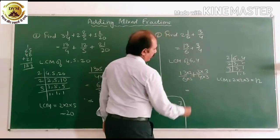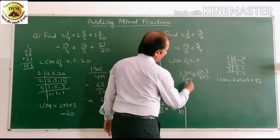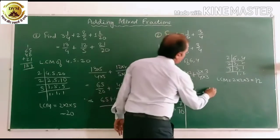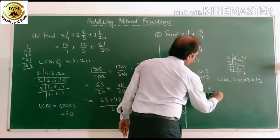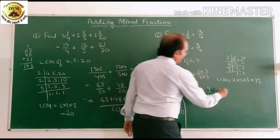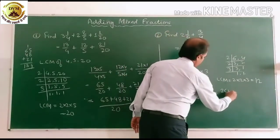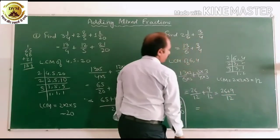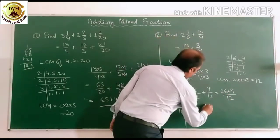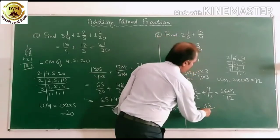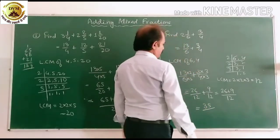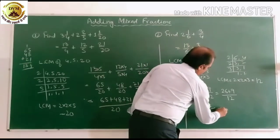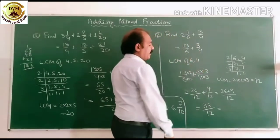So we can get 13 by 6 is 26 by 12 plus 3 is 9 by 12 equal to, after adding numerator 26 plus 9 and common denominator 12 equal to 26 plus 9 is 35 by 12. We can change into mixed fraction.